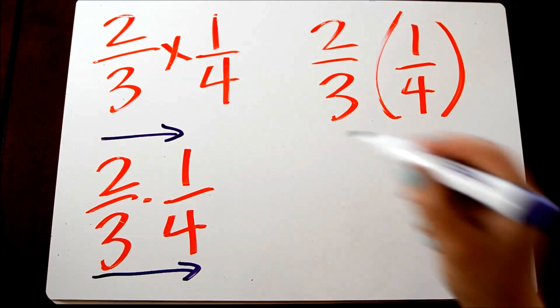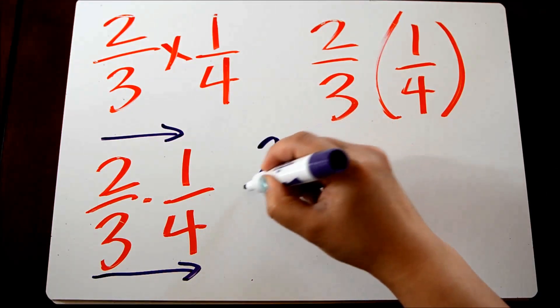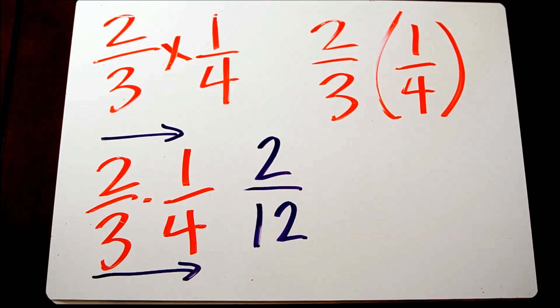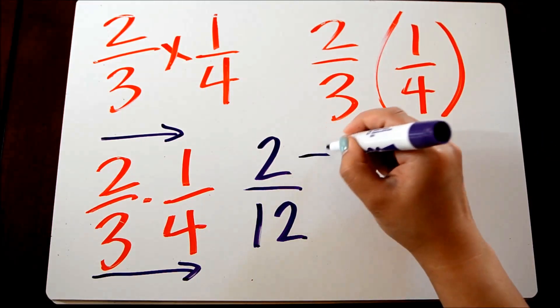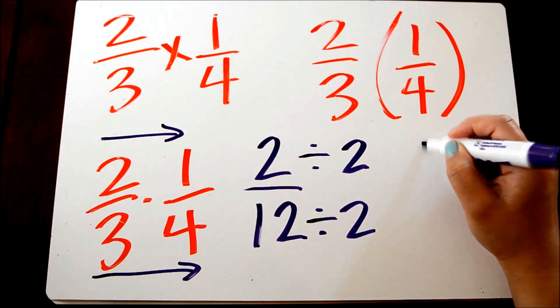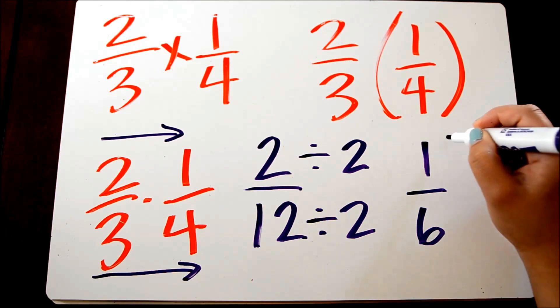Here, 2 times 1 is 2 over 3 times 4, which is 12. We're going to reduce or simplify whenever we can. Here we could divide the numerator and the denominator by 2, so our final answer would be 1 over 6, or 1 sixth.